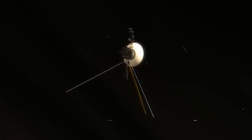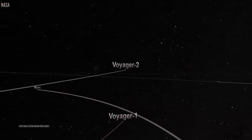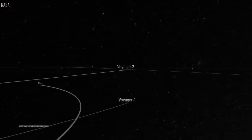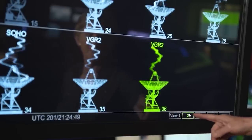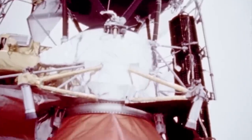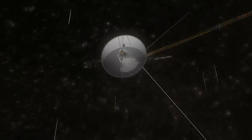2018 saw Voyager 2 make its heliopause crossing on November 5th. This time, there were no questions raised by the passage. The spacecraft's plasma instrument was in use and able to monitor the increase in particle density brought on by protons, electrons, and other charged particles colliding with it. It also noted the temperature, which was between 30,000 and 50,000 Kelvin, and was much greater than that of the neighboring interstellar medium. The plasma was probably compressed when it entered the heliosphere, which is why this happened.